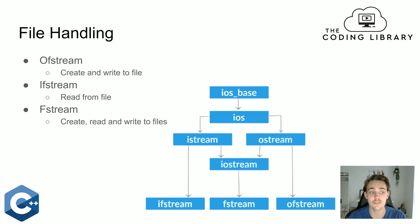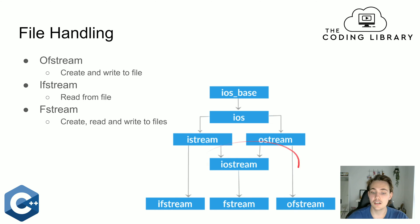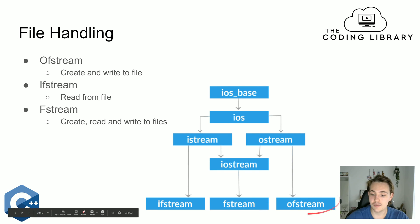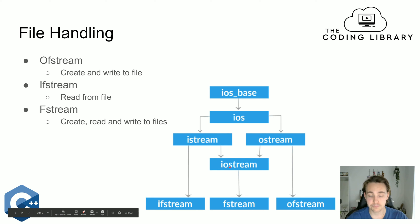First, we're going to talk about the basics of file handling in C++. We have an input-output stream base, and then we have different kinds of input-output streams. One is the input stream, where we can only get inputs; another is the output stream; and then we can combine them both, which is called the iostream. Under that, we have the fstream class, which we include in our program when we operate with files. We can have ofstream, which can only output to files, or ifstream, which can only read from files, or fstream, which does both.